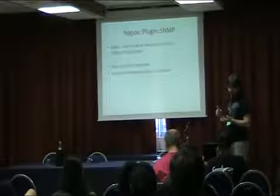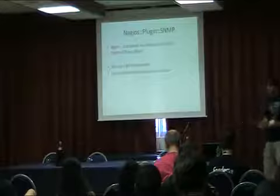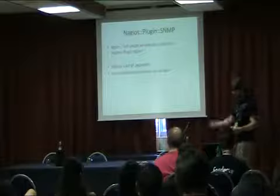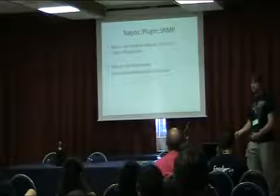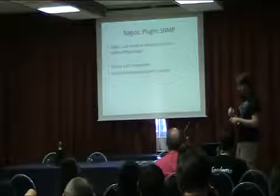It sets up arguments like warning, critical, hostname, the SNMP local IP, the SNMP version, a timeout, and debug. So if you want to read SNMP values, it already sets up everything you need to ask the user: what's the username for SNMP, what's the password, what's the protocol we want to use, etc. Nagios::Plugin::SNMP does it for you.